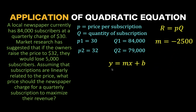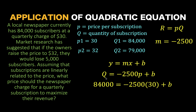Let's recall that the equation of a line is given by Y equals MX plus B. Our Y here is Q, our M is negative 2,500 that we already computed, and our independent variable X is the price. We need to find the y-intercept B. Using the ordered pair (P1, Q1) substituted into this equation, we get 84,000 equals negative 2,500 times 30 plus B. Solving for B, we have B equals 159,000. This is our y-intercept.